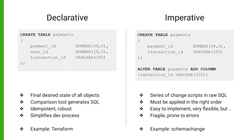It also makes it much easier to recover from errors. If something goes wrong, you can simply apply the same config once again and all errors should be fixed automatically. It also simplifies the development process greatly. A good example of a declarative style tool is Terraform.